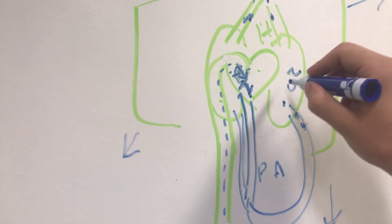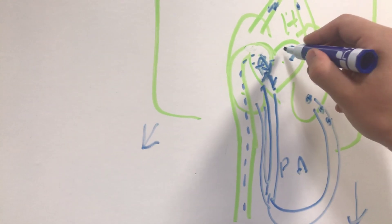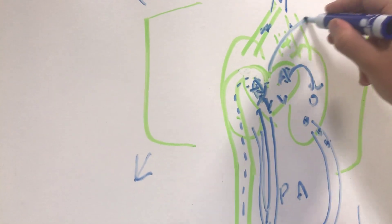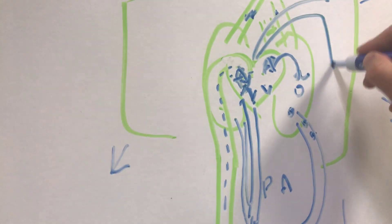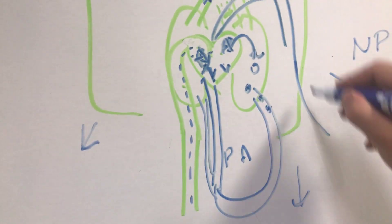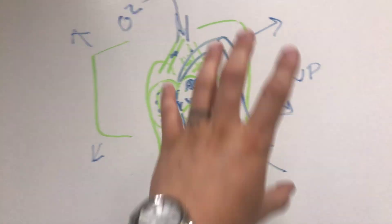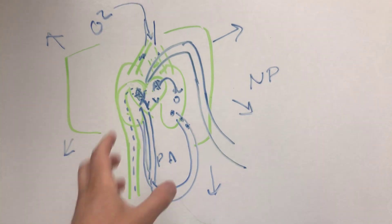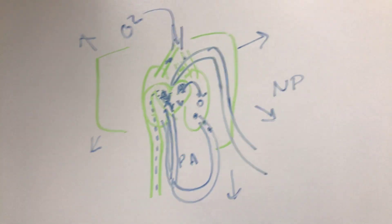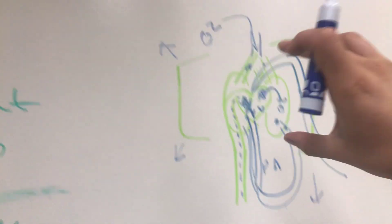That blood, which now has O2, returns to the left side of the heart — the left atrium — down to the left ventricle, and then via the aorta, a vessel called the aorta, that oxygen-rich blood will then feed the tissues of your body. So I just went over the physiology of the lungs and your heart, and how these two feed the tissues of the body. Physiology is how all the parts in your body work together.